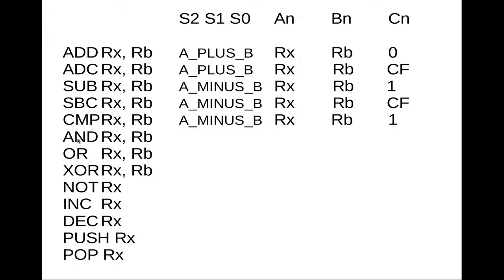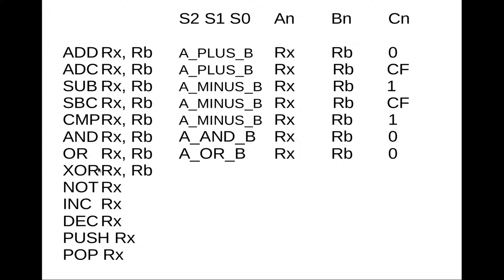For the AND instruction, the 74LS382 provides this directly. We hook A to the bus, B to the B register, set carry to 0 (carry doesn't have meaning for logical operations), and select the AND operation. Logical OR is also provided directly and wired the same way. Exclusive OR is similarly provided — we set the correct selector bits, wire A to the bus and B to the B register, and don't set the carry.